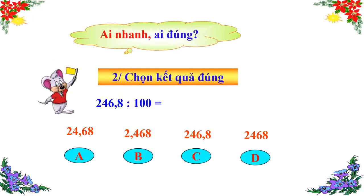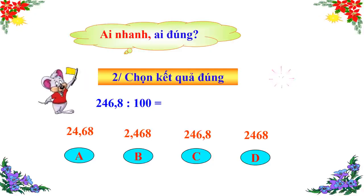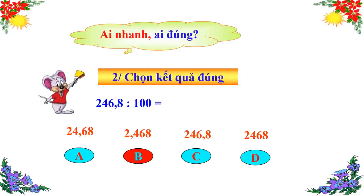Câu số 2: Chọn kết quả đúng. 246,8 chia 100 bằng bao nhiêu? A: 24,68 — B: 2,468 — C: 246,8 — D: 2468. Câu trả lời chính xác là câu B: 2,468. Thầy chúc mừng tất cả những bạn chọn đúng đáp án B. Như vậy, để chia một số thập phân cho 100, ta chỉ việc dời dấu phẩy sang bên trái hai chữ số là có ngay kết quả.